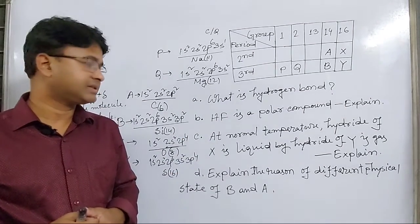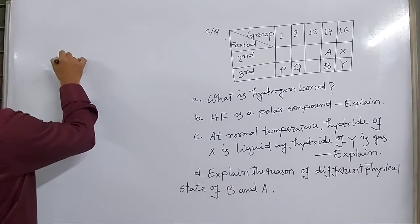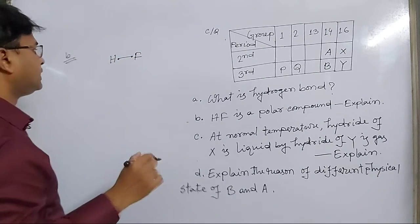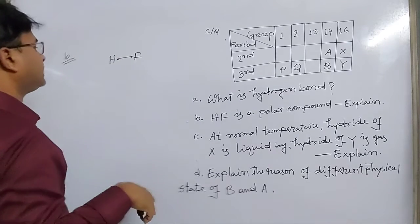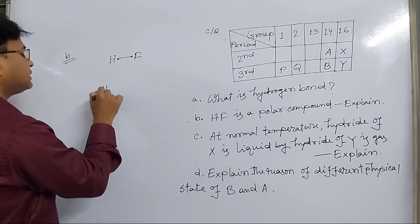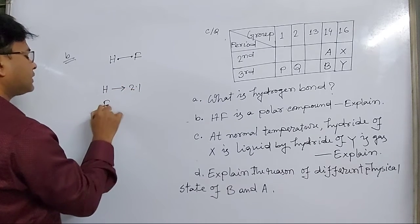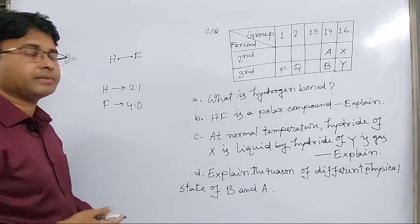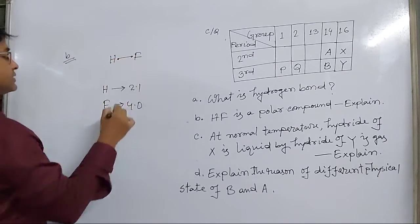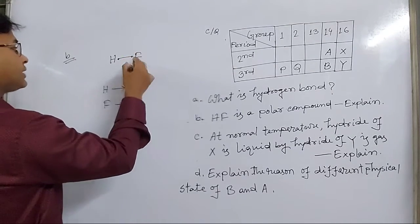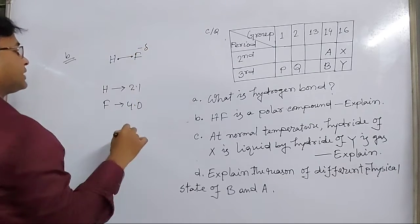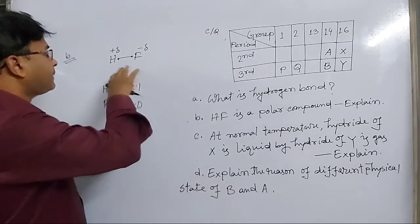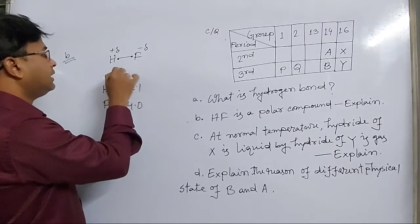Hydrogen fluoride is a polar compound. Hydrogen fluoride is a covalent compound, so hydrogen is bonded with fluorine by a covalent bond. The electronegativity of hydrogen is 2.1 and fluorine is 4.0, so the difference is more than 0.5. That's why the bond pair electron is pulled by fluorine — the more electronegative atom — making fluorine partially negatively charged and hydrogen partially positively charged. A dipole is created, making hydrogen fluoride a polar molecule.